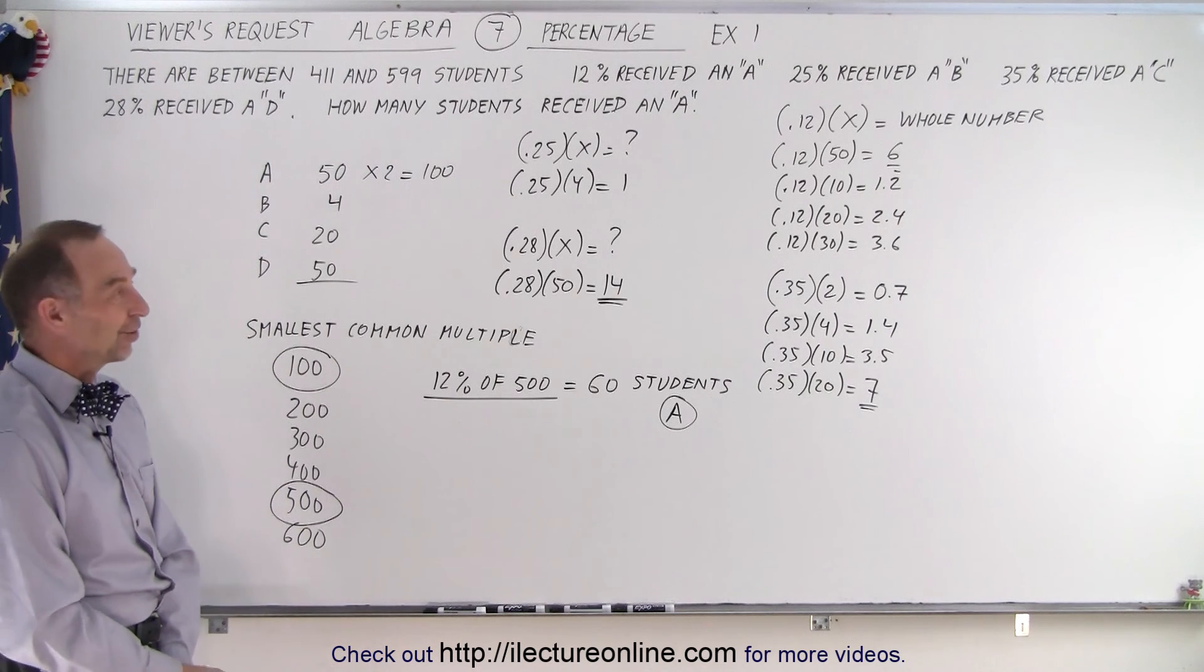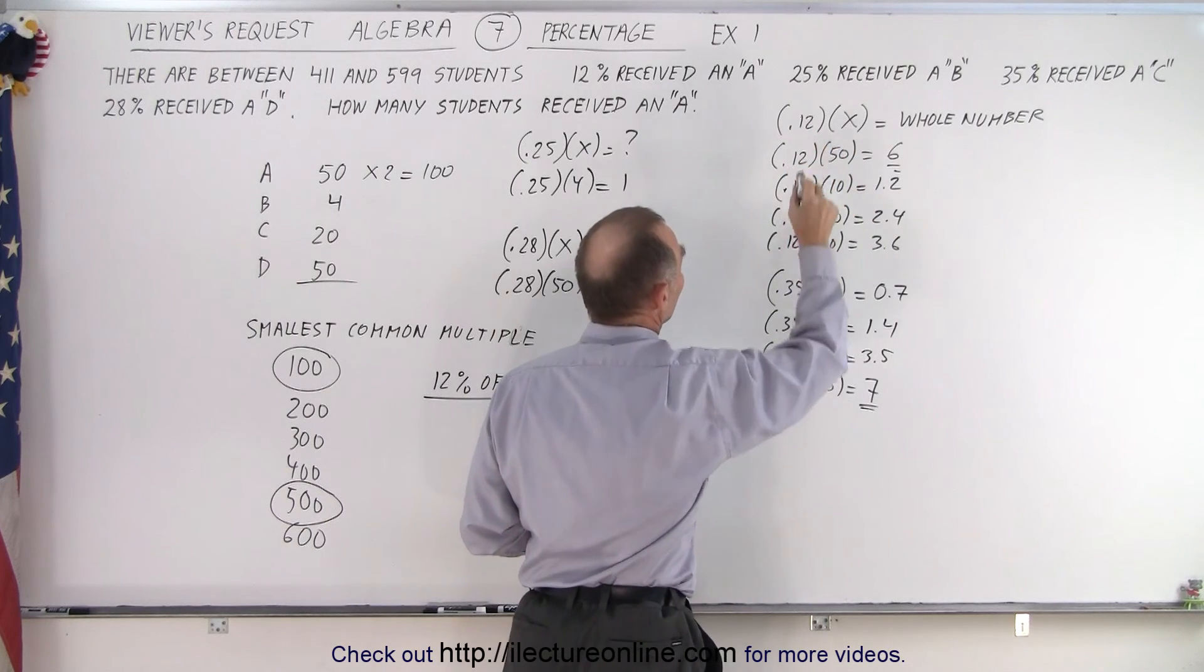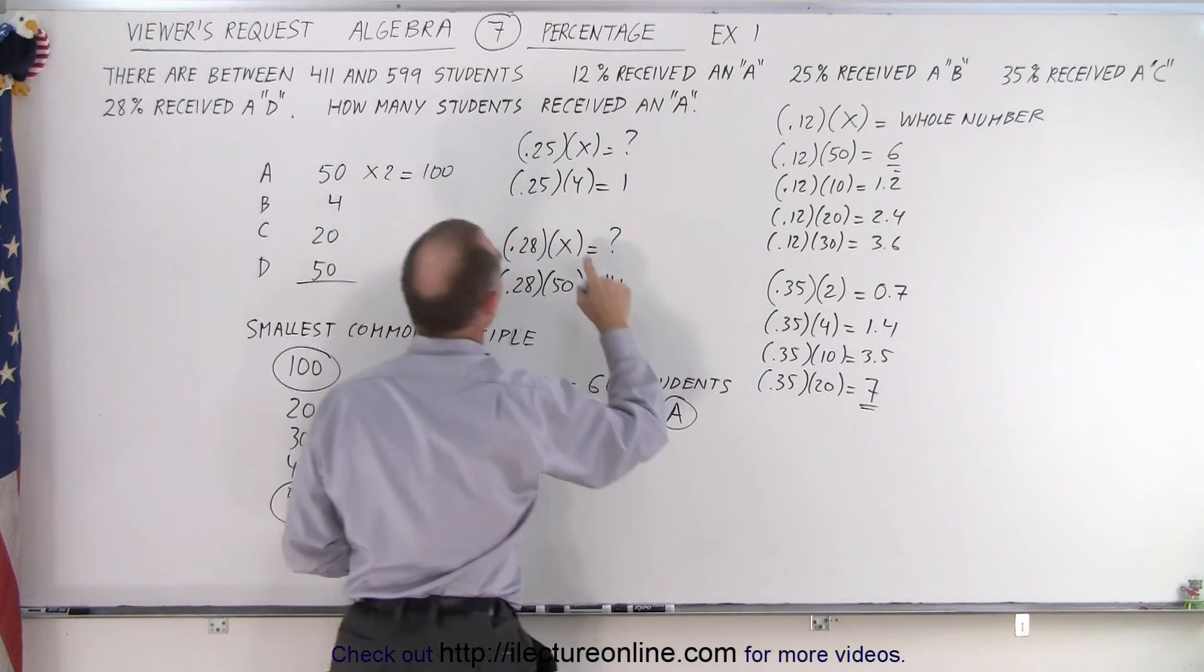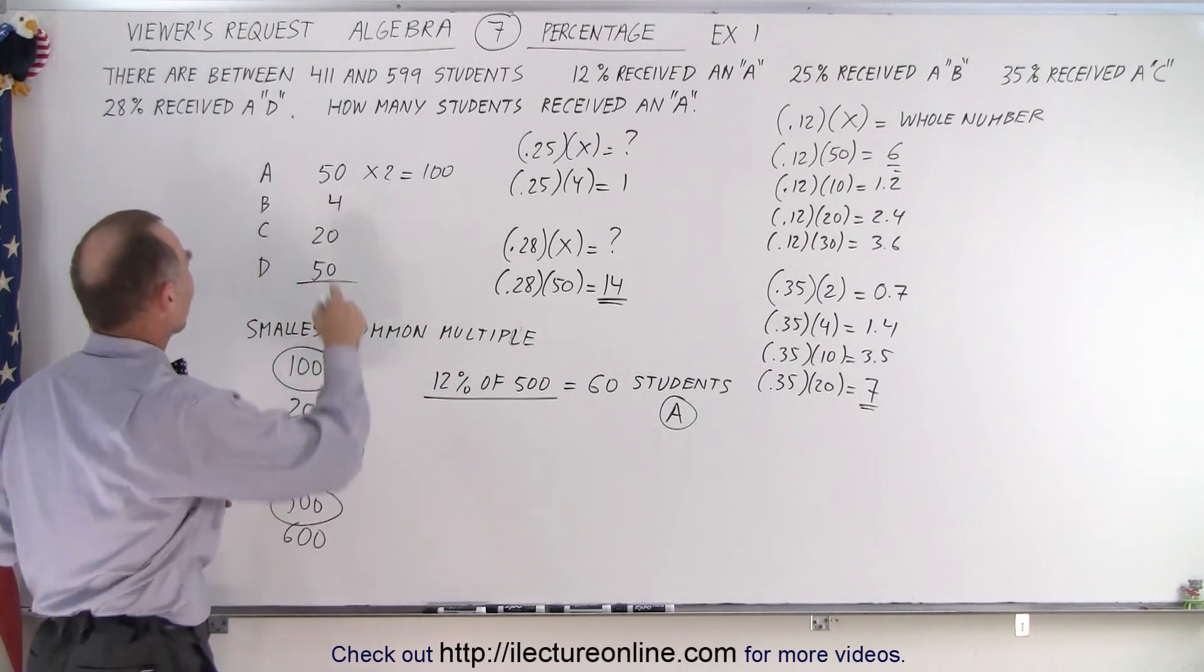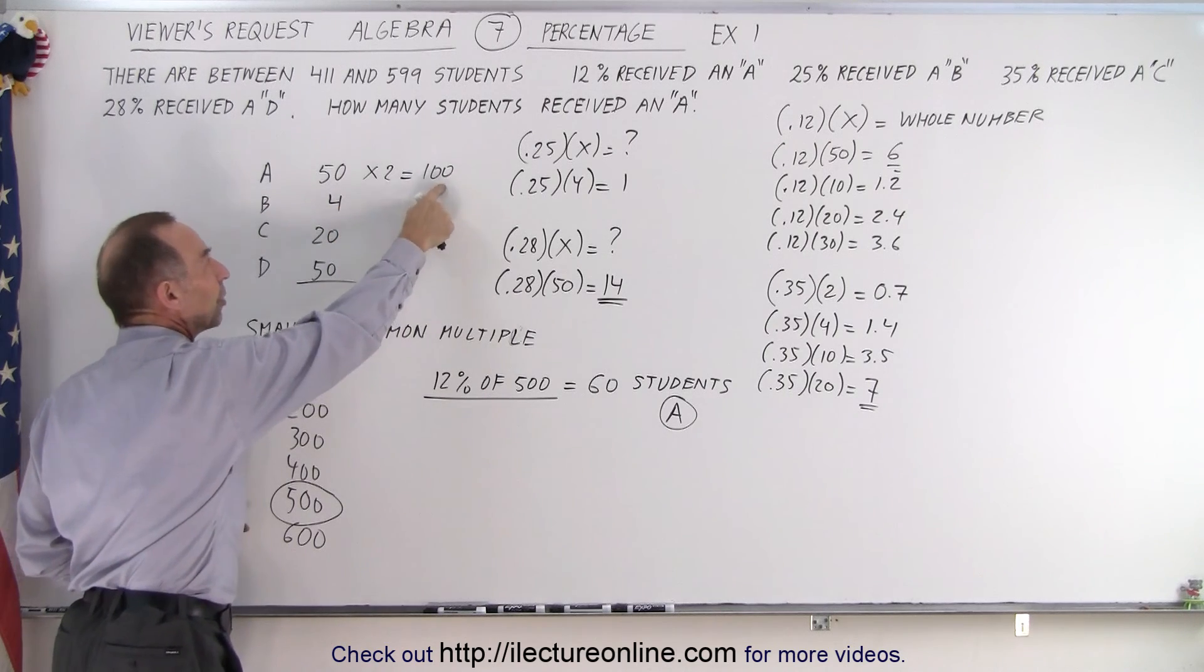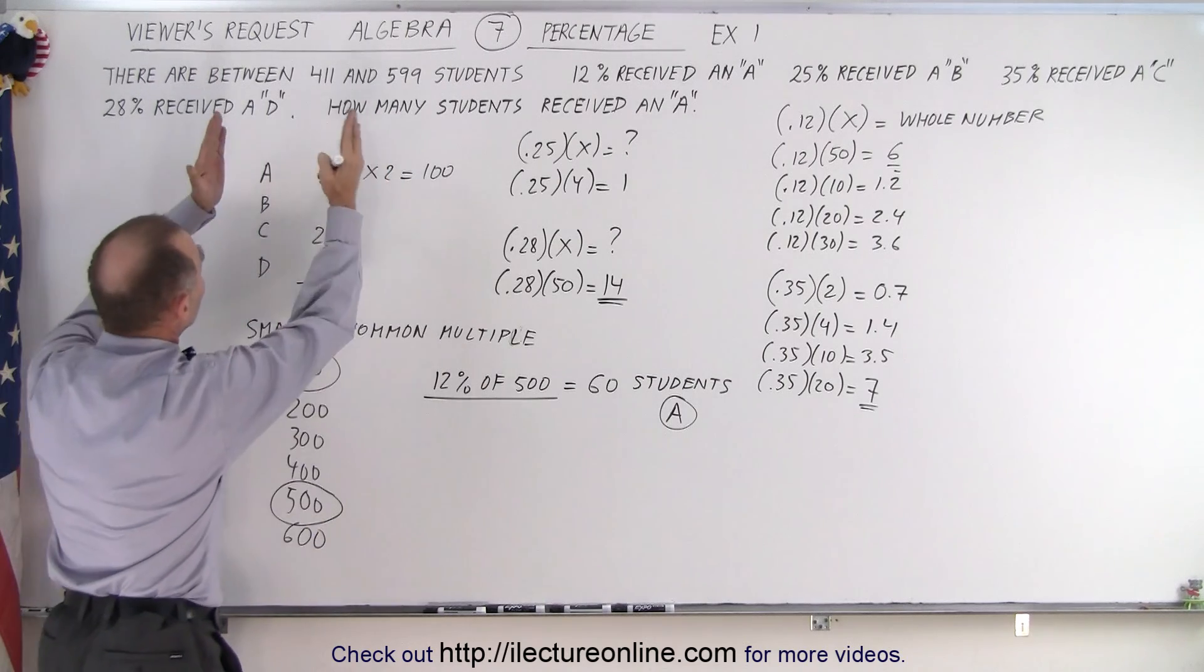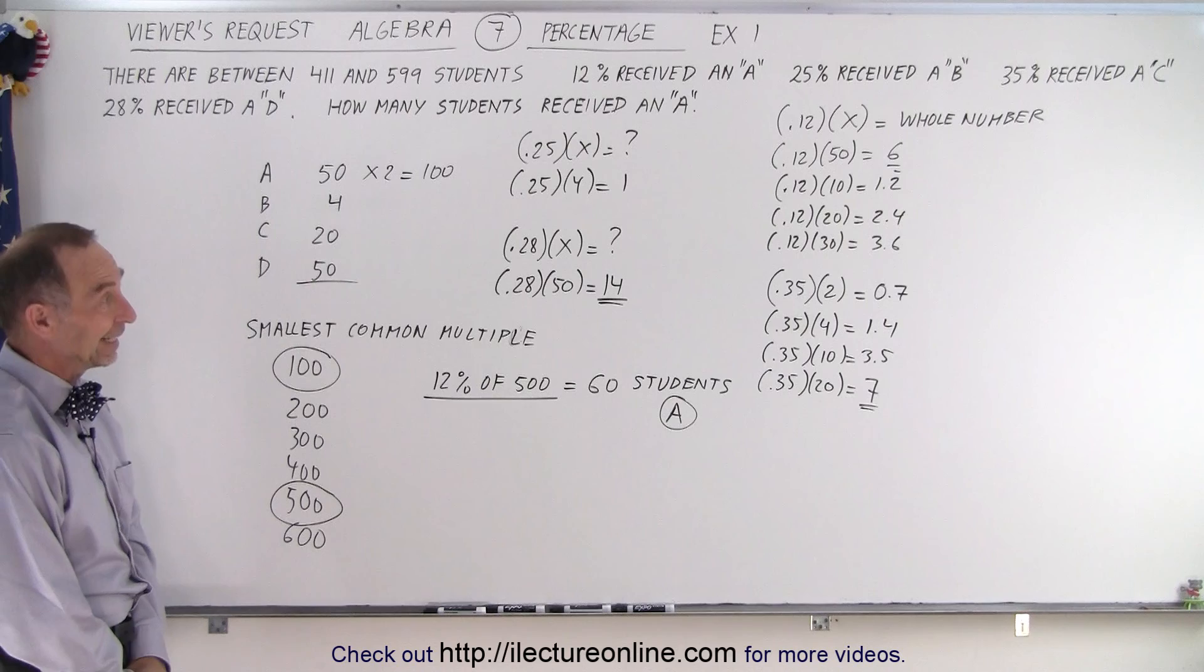And that's how it works. So essentially, what you're doing is you don't know what the number is, but you look and see what number I must multiply times each of the percentages: 12%, 25%, 35%, or 28%. I must multiply this one by 50 to get a whole number, this one by 20 to get a whole number, this one by 4 to get a whole number, and this one by 50 to get a whole number. And now I'm looking for the smallest common multiple of all these numbers: 50, 4, 20, and 50. If I take the biggest number and multiply times 2 to get 100, the other three numbers fit evenly into this number. So this is the common multiple of the four numbers. It could be 100, or any multiple of 100: 200, 300, 400, 500. The only number that fits within the range is 500, so there are 500 students, and 12% of 500 gives me 60 students that received the A. That's how it's done.